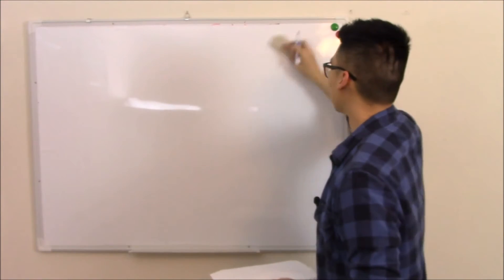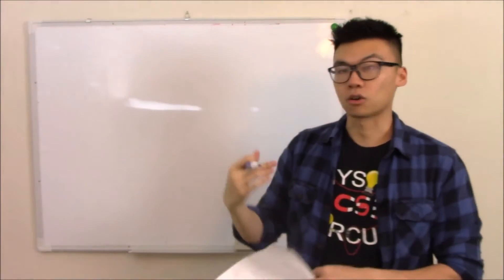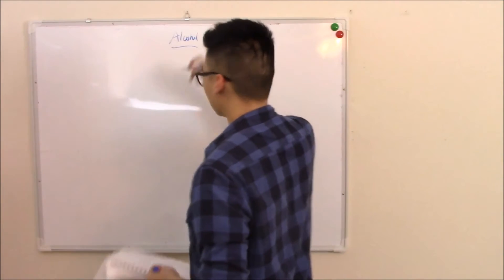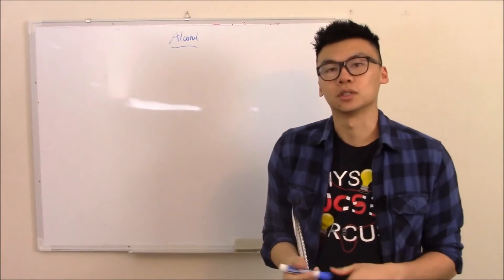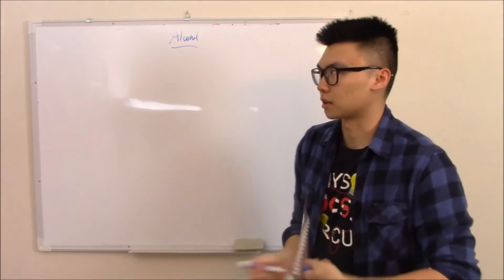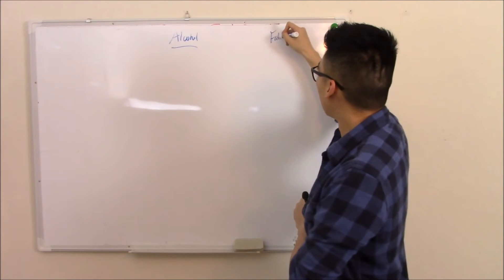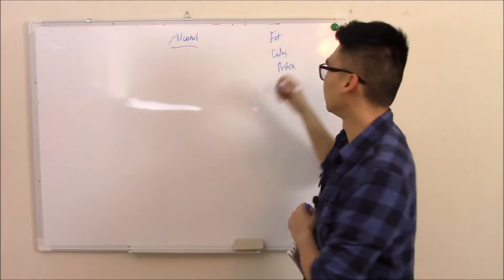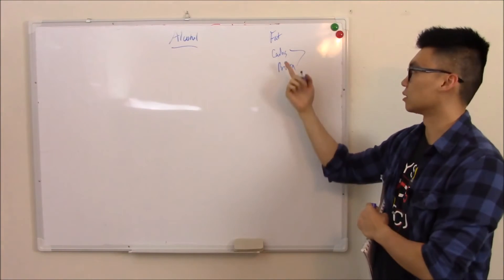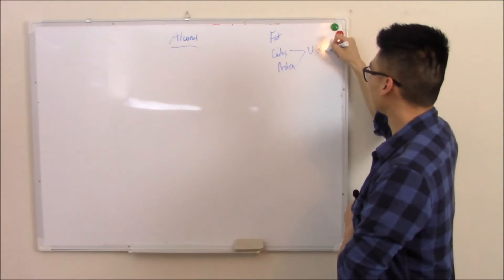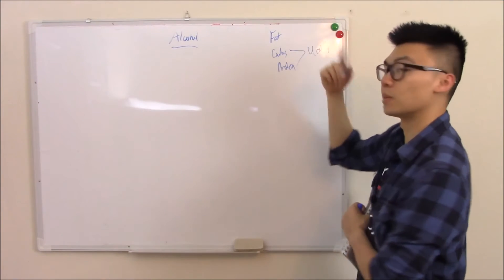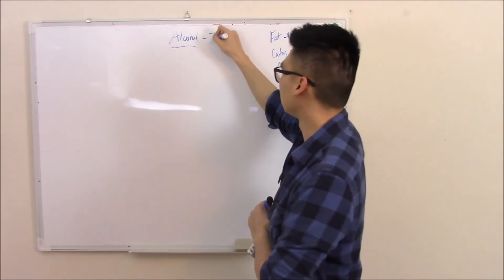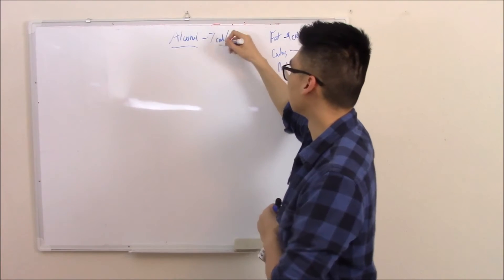Our final subject is alcoholism, or alcohol in general. Way back, we talked about fat, carbs, and protein and how many calories were in them. Carbs and protein are four calories per gram, fat is nine. Alcohol is somewhat split in the middle at seven calories a gram.